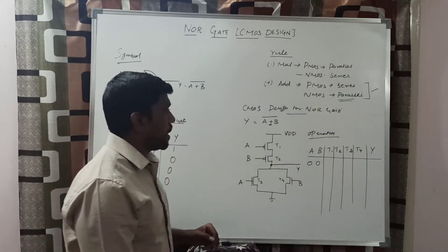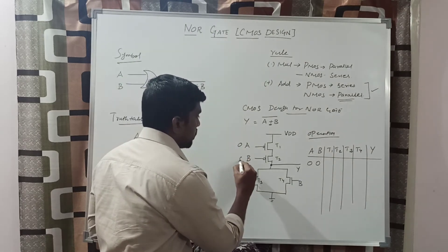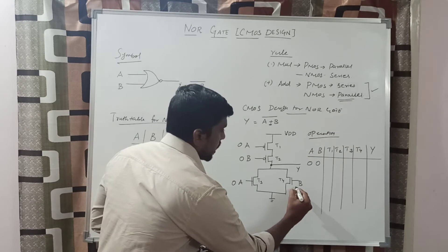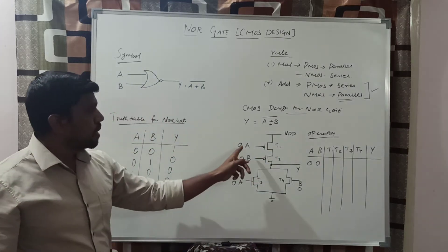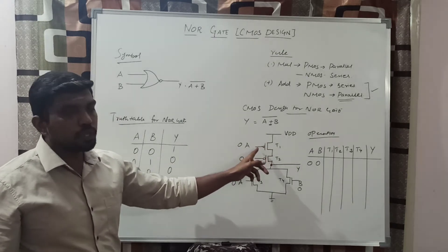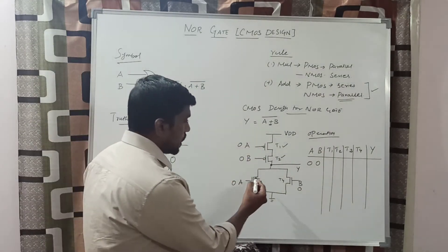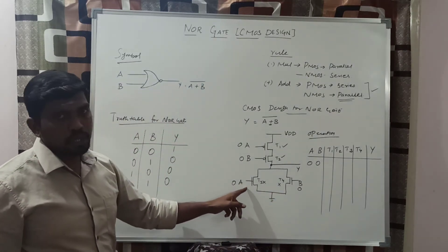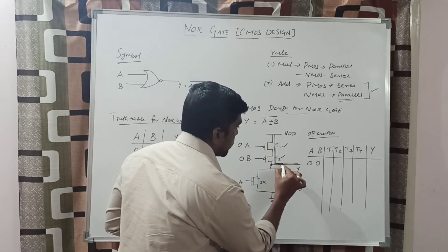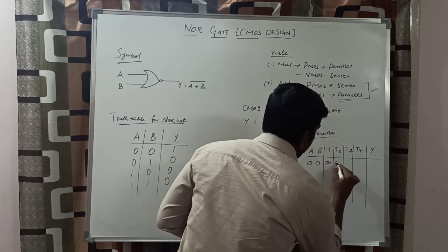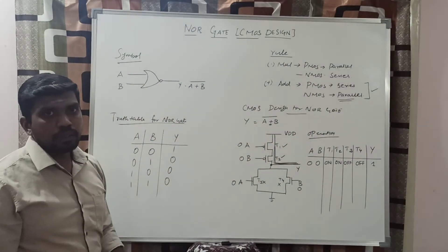The first combination of input is A equal to 0 and B equal to 0. This input value is assigned in the diagram — A value 0, B value 0 in the pull-up transistors, and A value 0, B value 0 in the pull-down transistors. The bubble represents the inverse function, so the A value of 0 is converted to 1 internally. T1 transistor turns on, T2 transistor turns on — both transistors are on. T3 and T4 turn off because the gate value is 0. With T1 and T2 on, VDD is directly connected to the output. T1 on, T2 on, T3 off, T4 off — the response of the circuit is 1.